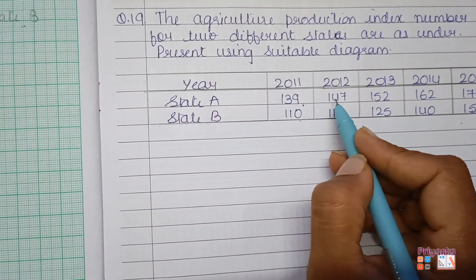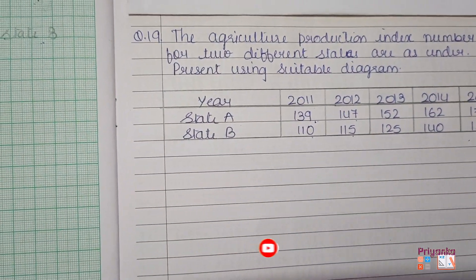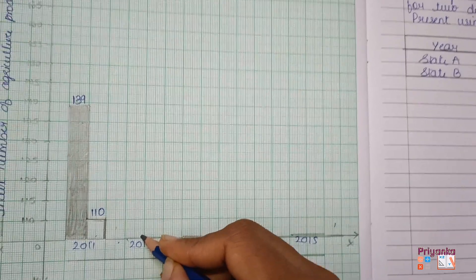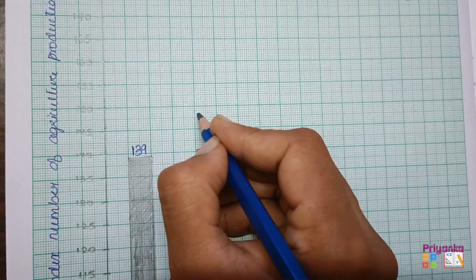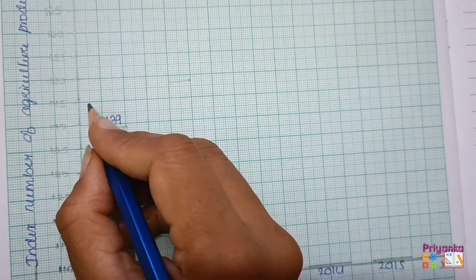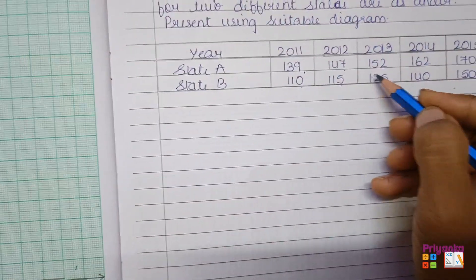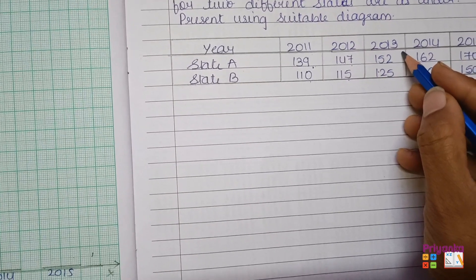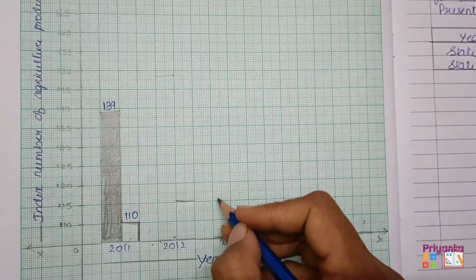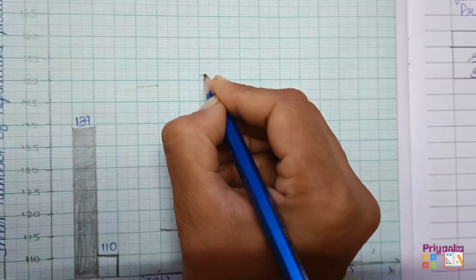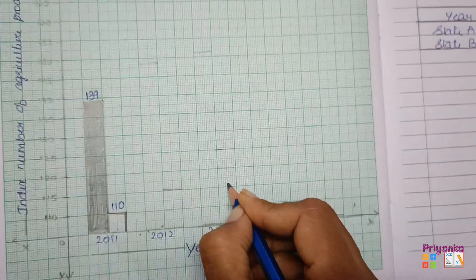For the year 2012, the production index for state A is 147 and for state B it is 115. For year 2013, state A is 152 and state B is 125. So 152 goes a little more than 150 on the scale, and 125 is at its exact margin.